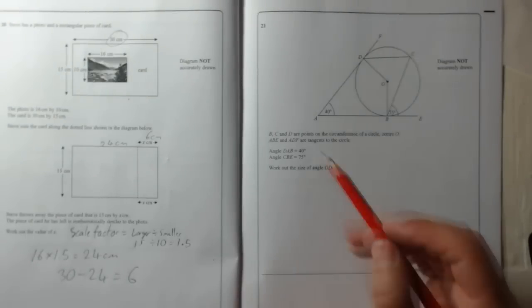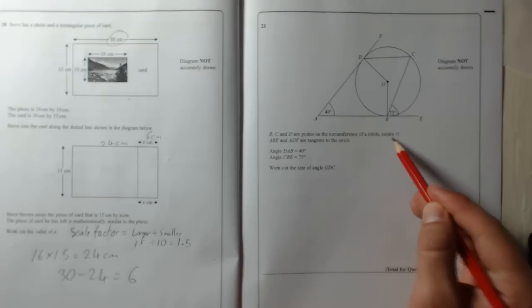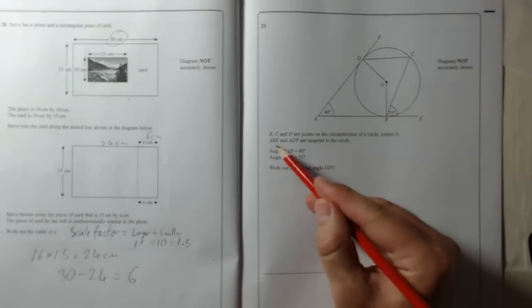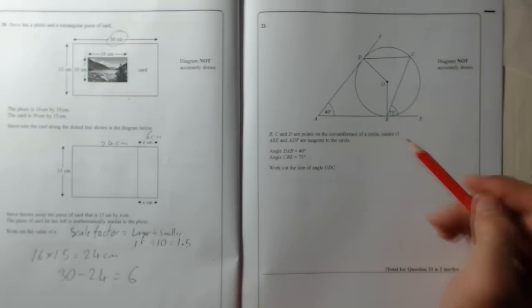Question 21: B, C and D are points on the circumference of a circle centre O. ABE and ADF are tangents to the circle.